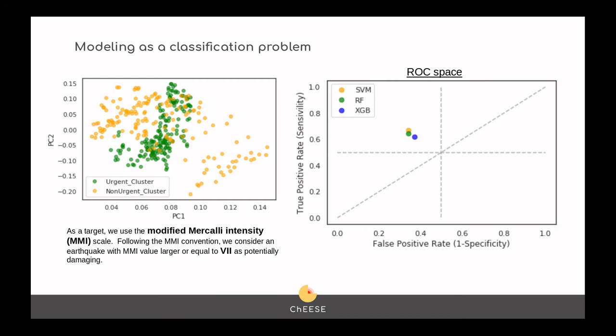We plotted our results in a ROC space, and as you can see, the three algorithms give us similar results, indicating that the predictive power is in our data. Our result is a meta-model that uses a voting system to classify an event as urgent or non-urgent. We observe an accuracy of approximately 70%, which we consider satisfactory given the short training time, the novelty of the methodology, and the database quality.